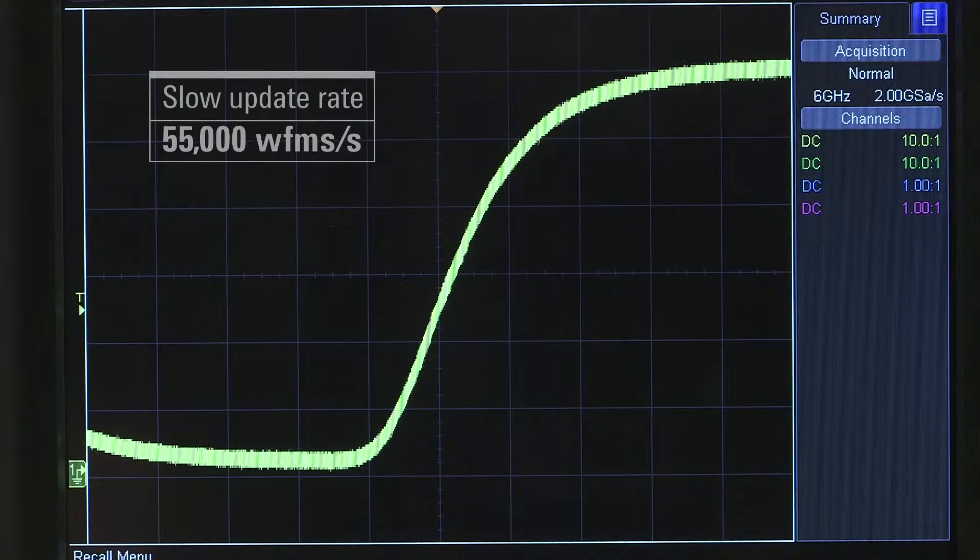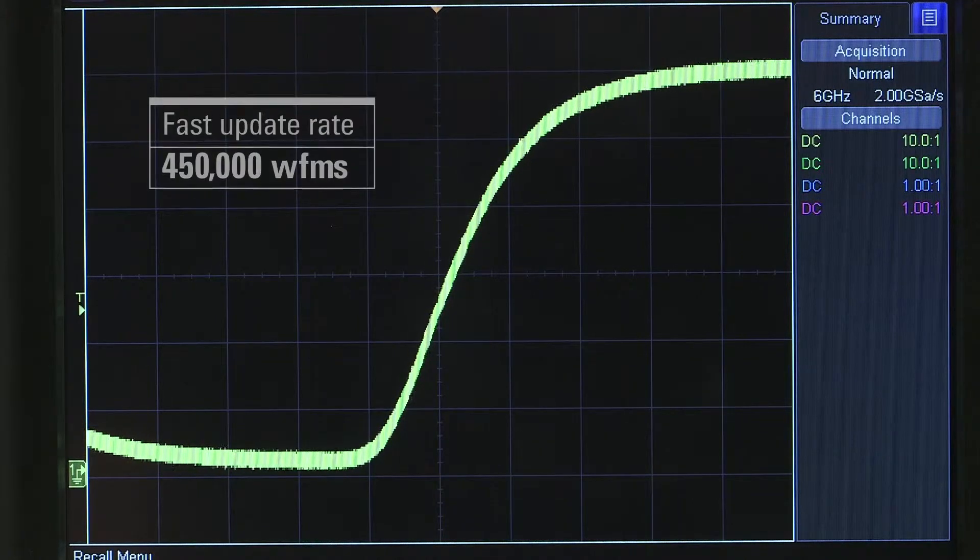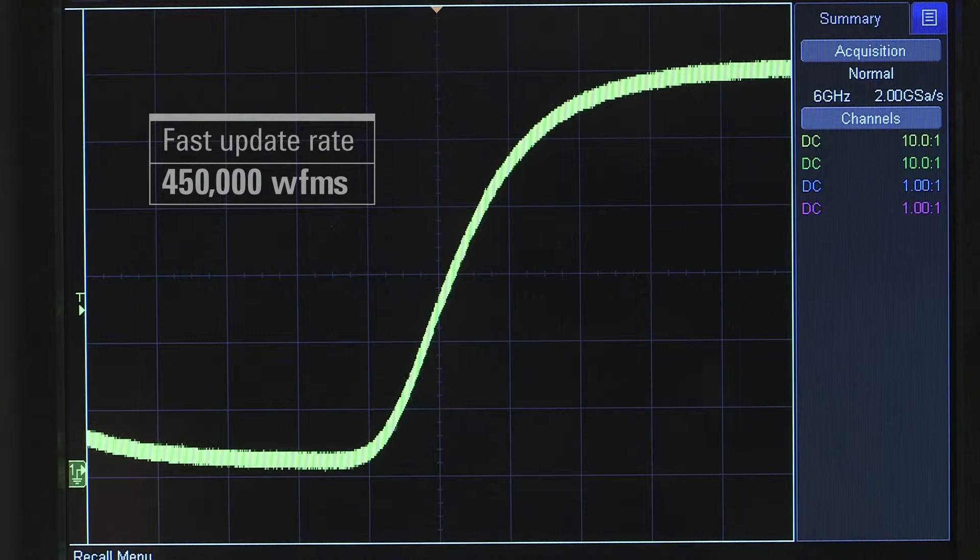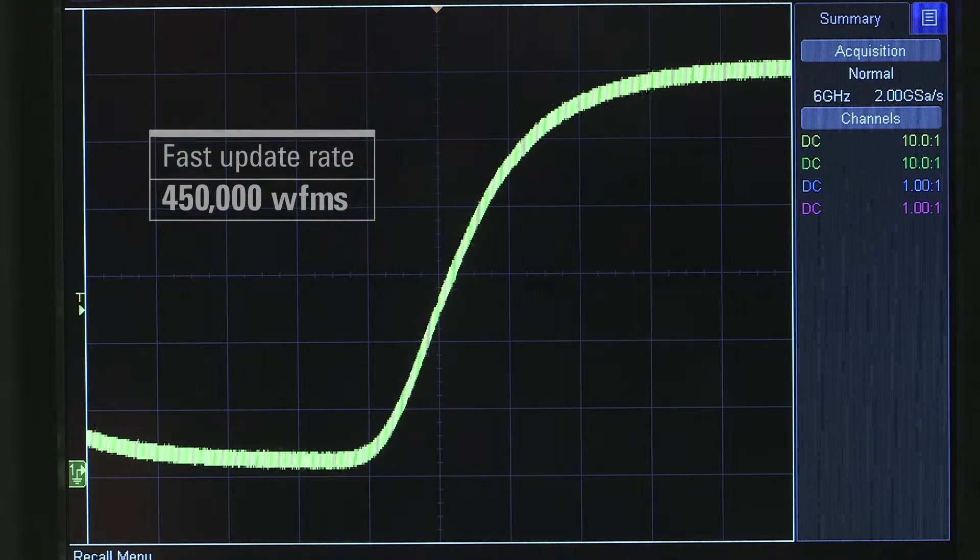With a 450,000 waveforms per second update rate, you'll be able to see all the signals and visualize even infrequent anomalies. If you can't see the problem, you can't fix the problem.